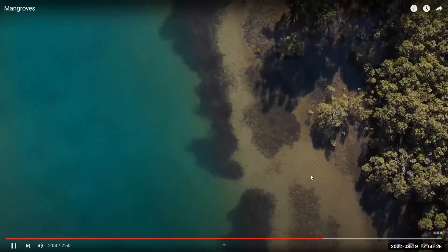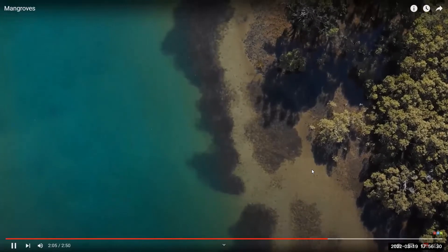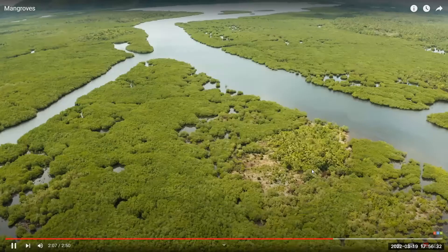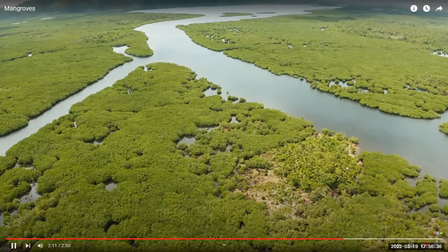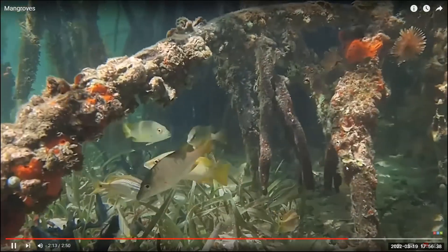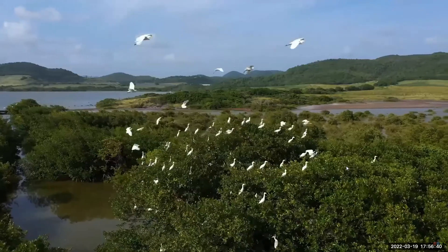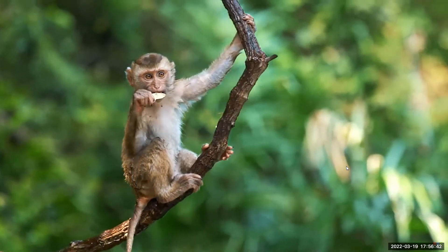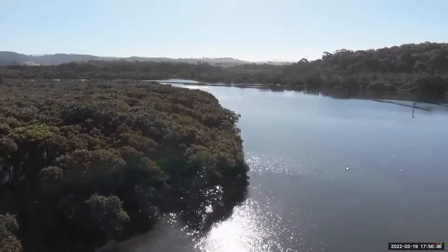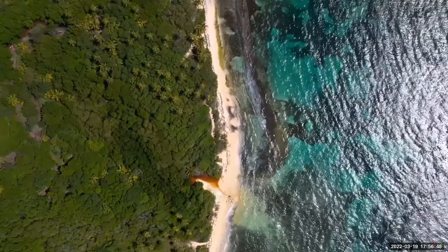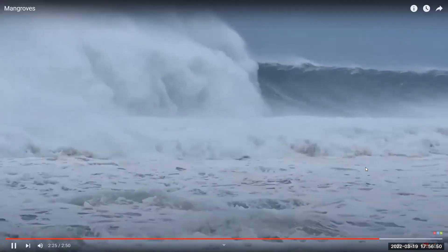Mangroves are an important component of coastal ecosystems. Mangrove forests provide breeding and feeding grounds for a range of animals including fish, crabs, birds, and some mammals. They also help to protect the coastline from erosion from waves, storm surges, and tsunamis.